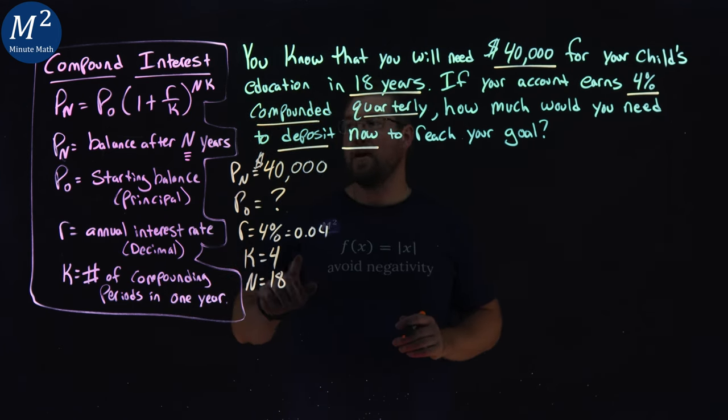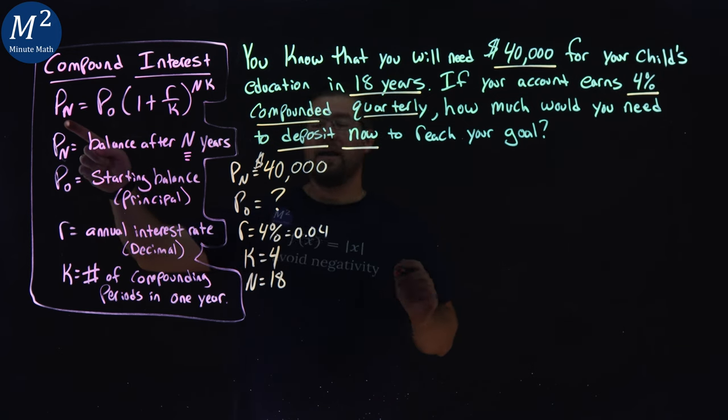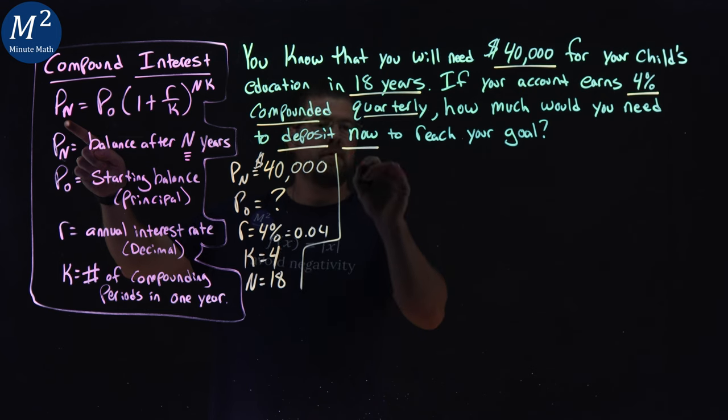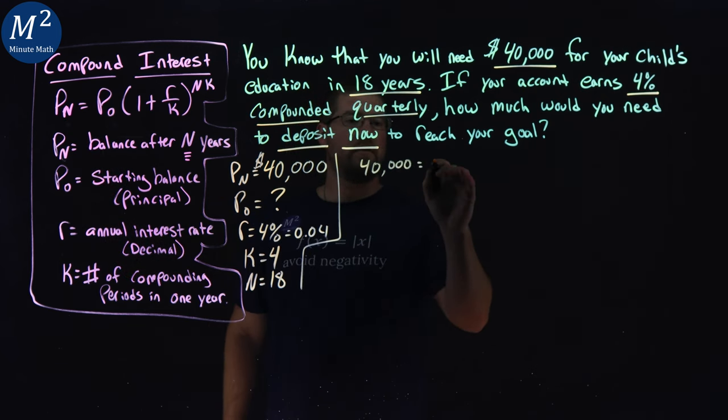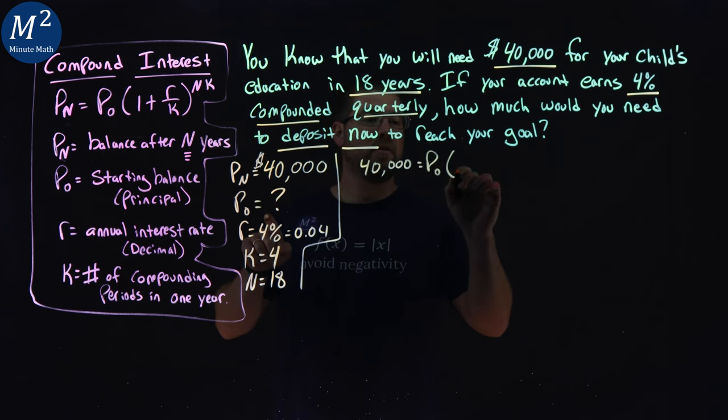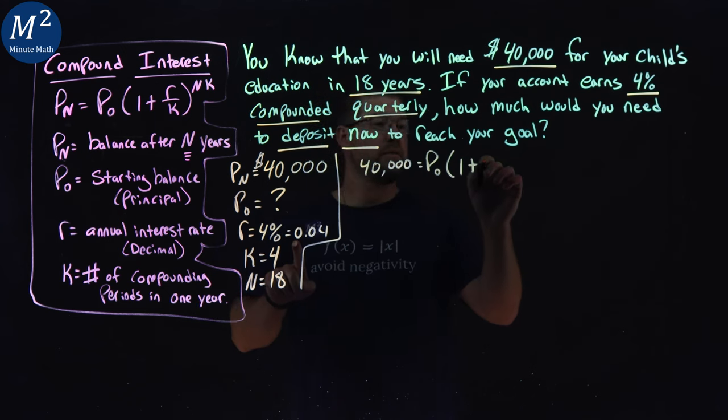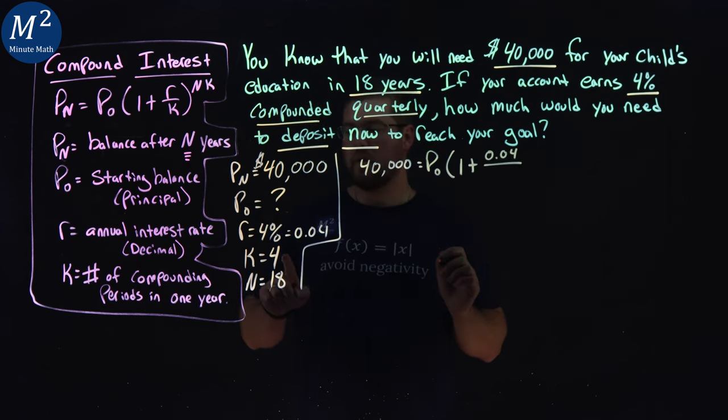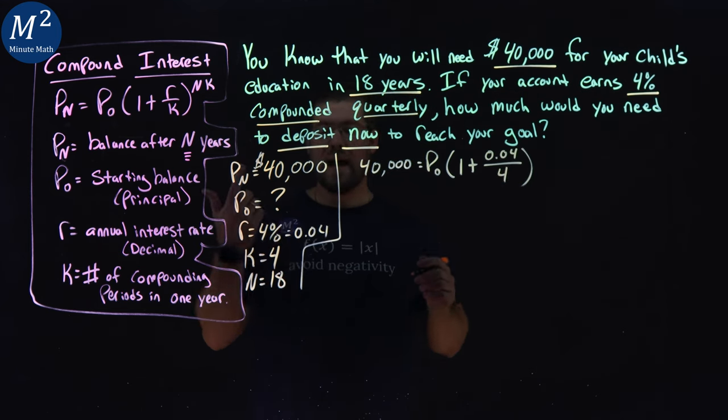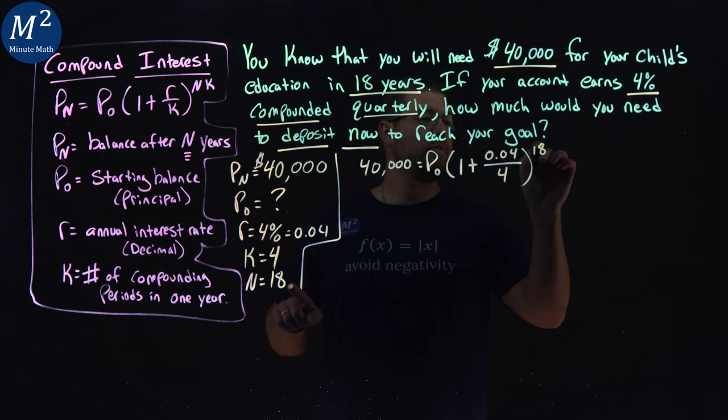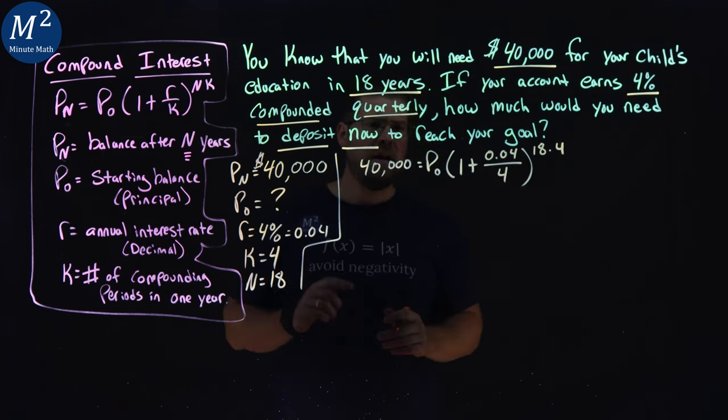So now we want to take each one of these values and plug it into our original formula. So P sub N here is 40,000. So we have 40,000 equals our initial amount, which we don't know, P sub 0, times 1 plus our R value, 0.04, over our K value, 4 compounding periods, to the exponent N, 18 years, times K again, which is 4.